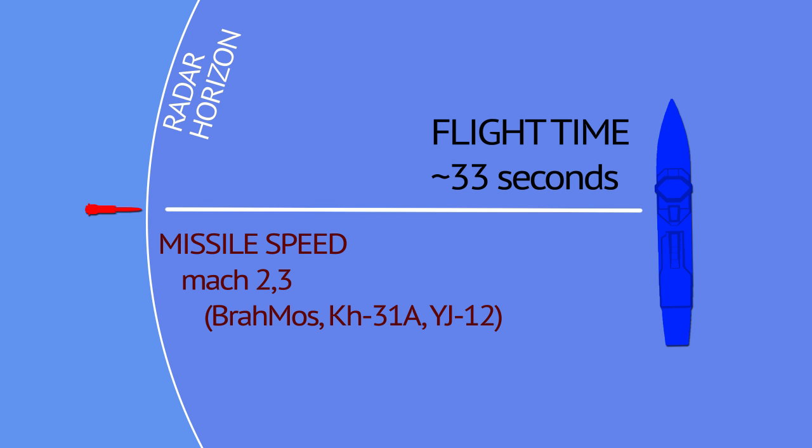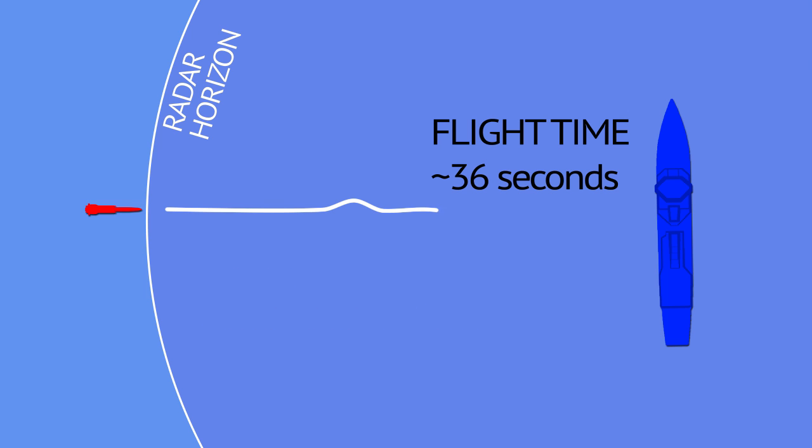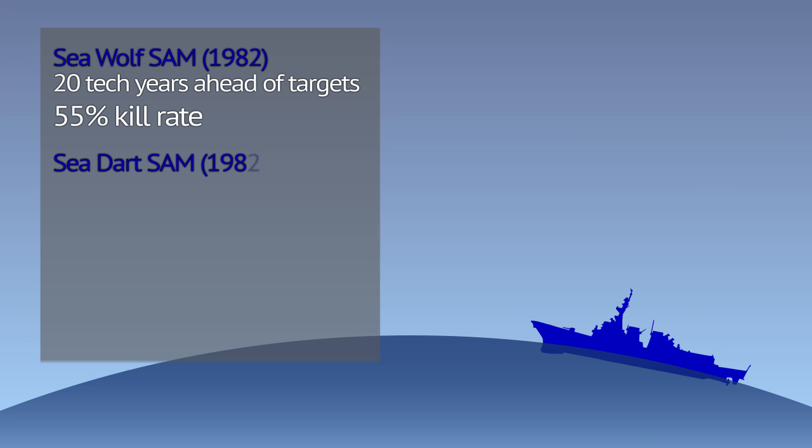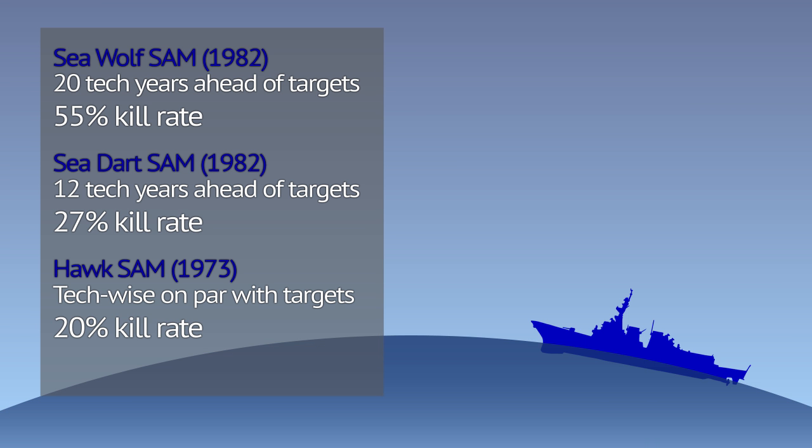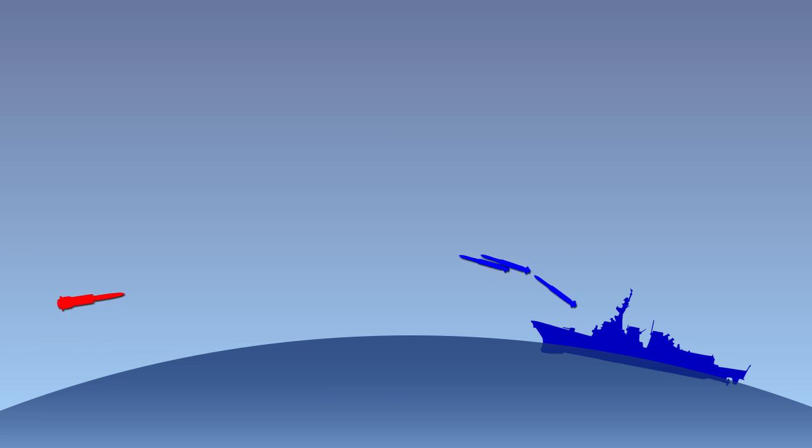Supersonic attack missiles would be programmed to perform random defensive maneuvers, making their path longer but reducing the chance of being hit. Historical statistics suggest that even when interceptor had a technology lead against a non-maneuvering target, kill rate was around 50%. Aegis should expect to use at least two, but possibly three or more interceptor missiles to bring down each attacker.